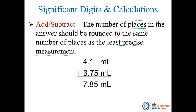Here's an example: 4.1 plus 3.75 gives 7.85. The least precise measurement in terms of places — 4.1 is precise out to the tenths place, while 3.75 is precise out to the hundredths place. Tenths is not as precise as hundredths, so my answer can only be out to the tenths. Drawing a line after the tenths place, 7.85 rounds off to 7.9 milliliters.